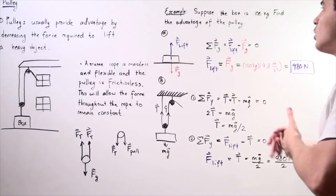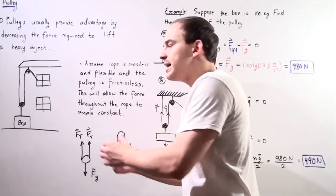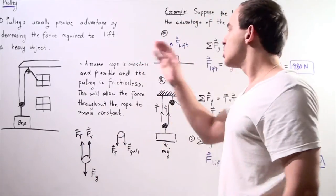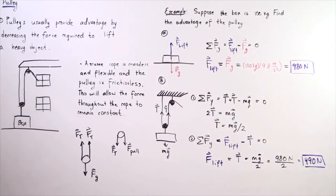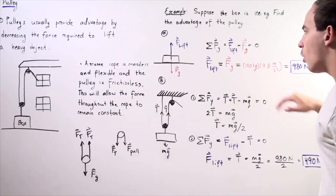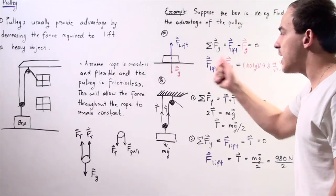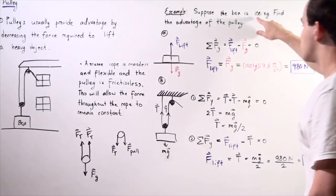Let's do the following example to see why using a pulley is more advantageous than simply carrying the box to the second floor. Suppose the box has a mass of 100 kilograms. We want to find the advantage of using our pulley, so let's first find what force is required to lift the box without the pulley.